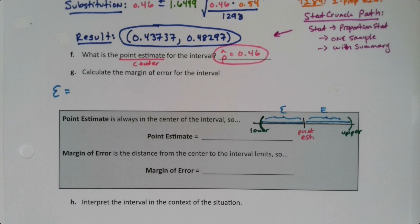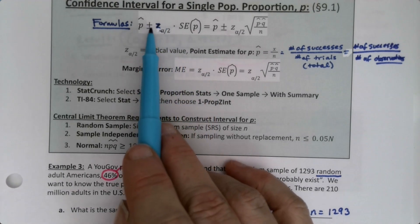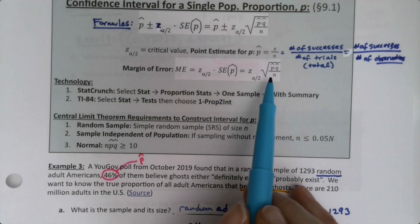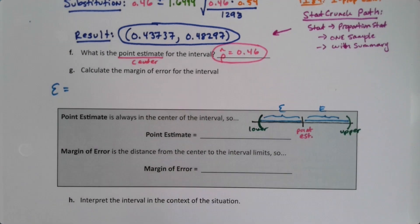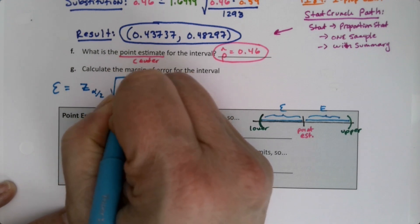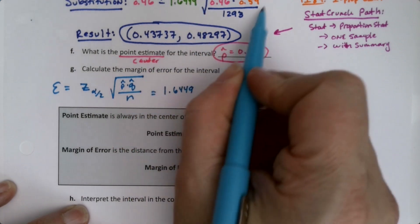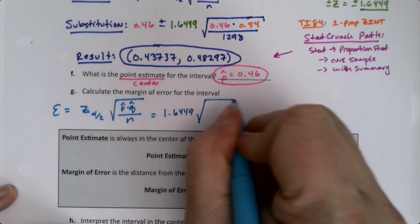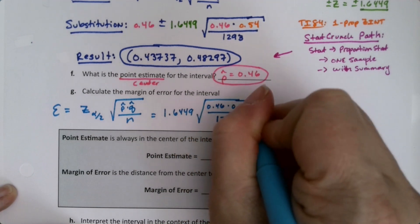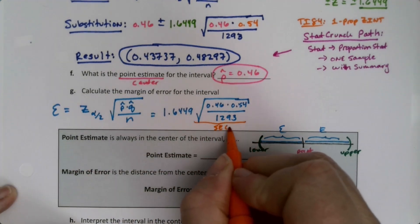The margin of error is this distance on either side. The formula for margin of error is given on the previous page — it's the part you add or subtract after the plus-or-minus. It's z times the standard error, or z times the square root of p-hat·q-hat over n. So that's z-alpha-over-two times the square root of p-hat·q-hat divided by n. That gives us 1.6449 times the square root of 0.46 times 0.54 over 1293.